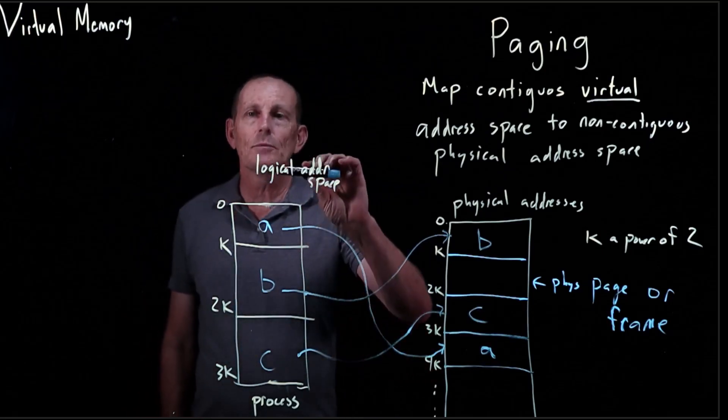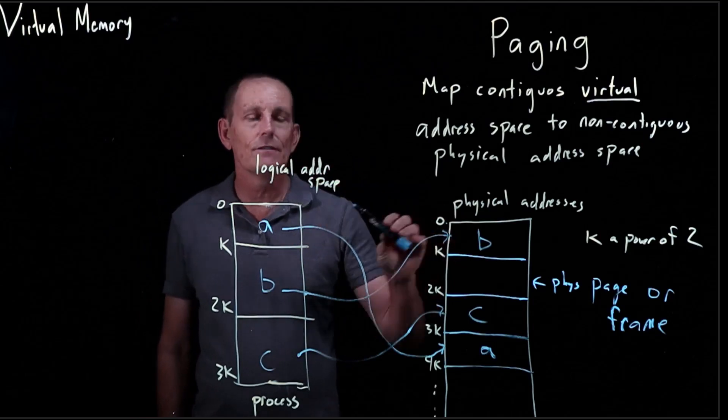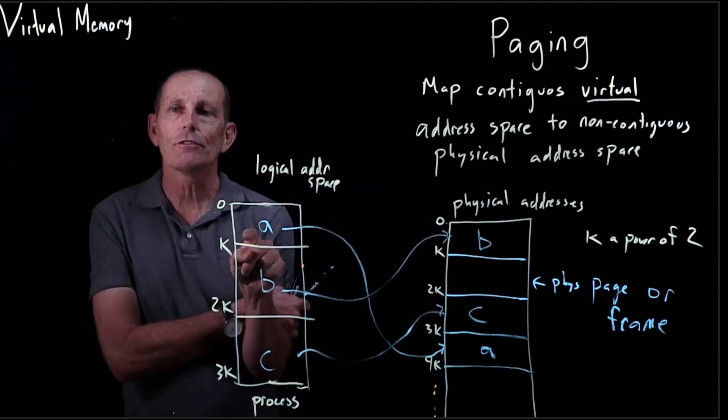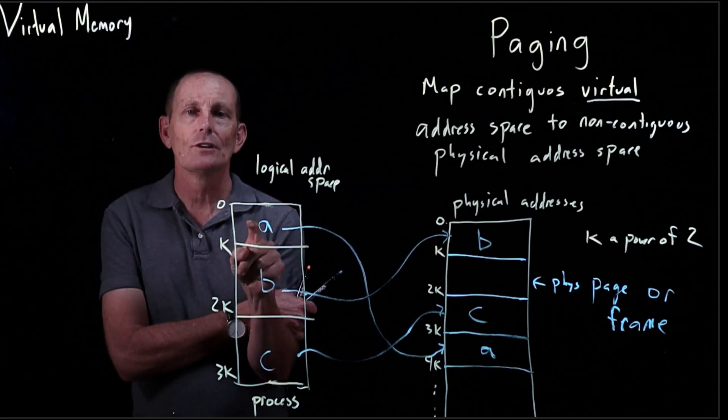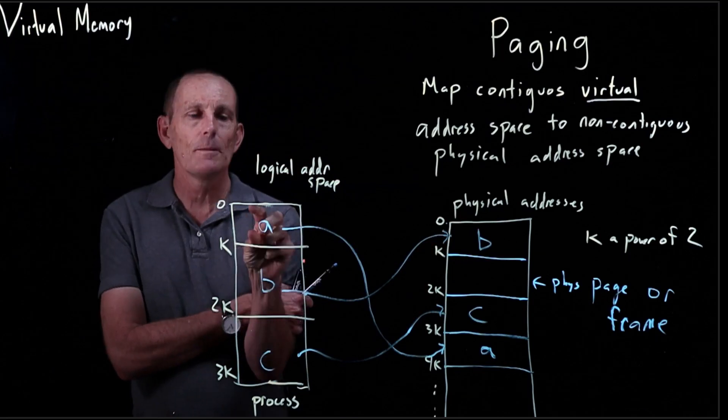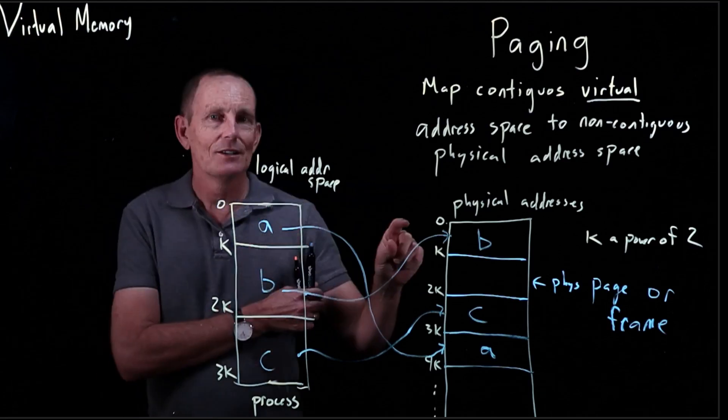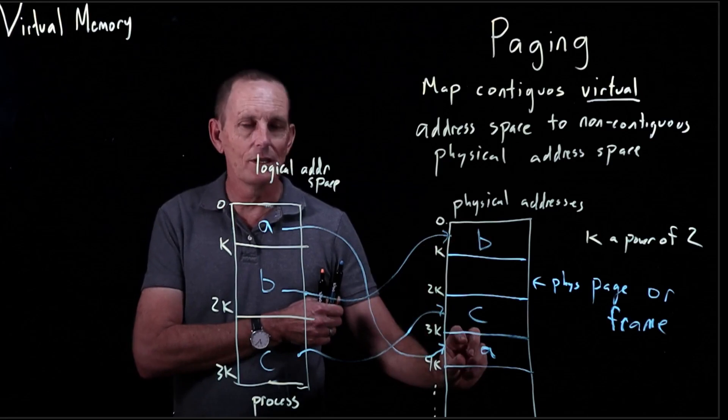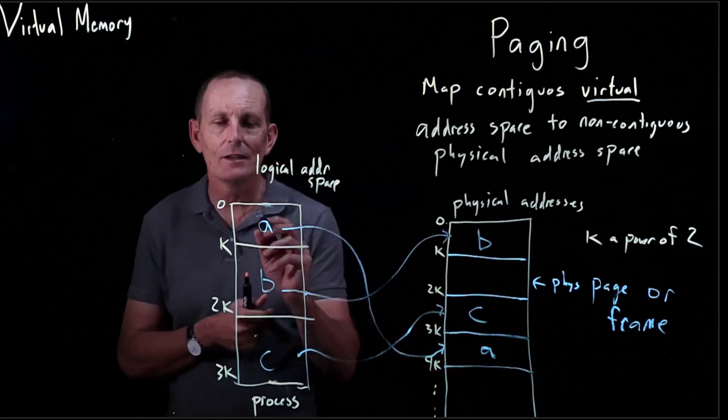So we have this mapping between logical addresses and physical addresses. Anything in this first page, any address in this first page, will be remapped to a location within here. So if we look at some address here,